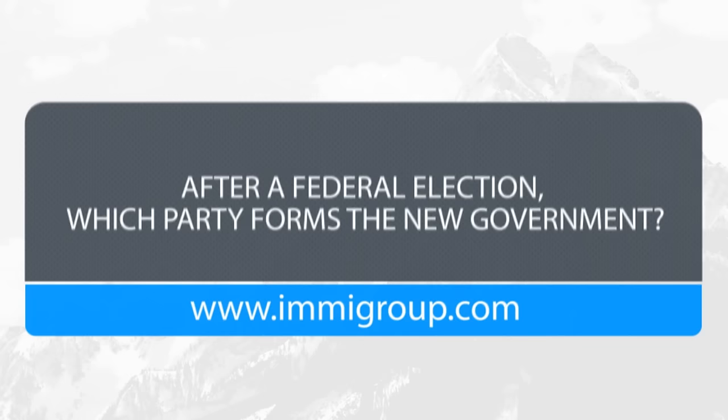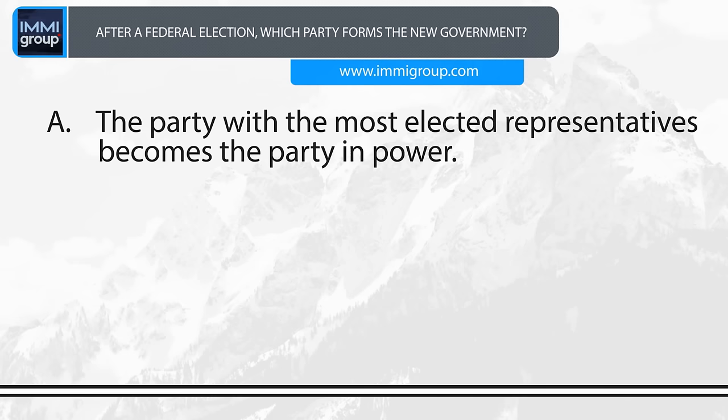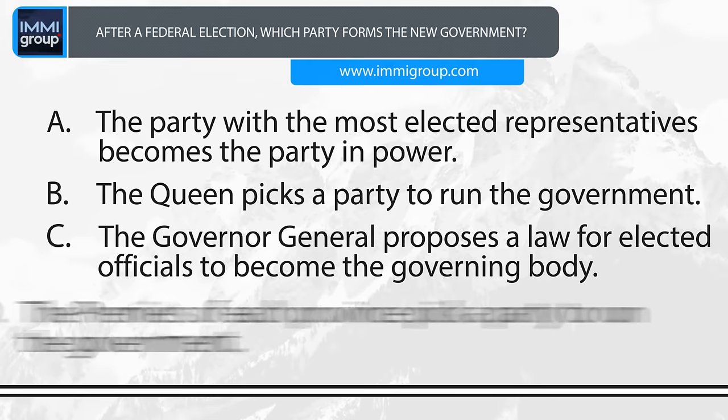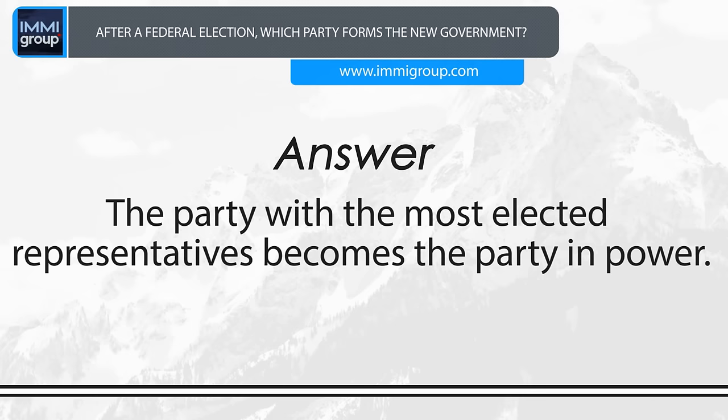After a federal election, which party forms the new government? A. The party with the most elected representatives becomes the party in power. B. The Queen picks a party to run the government. C. The Governor General proposes a law for elected officials to become the governing body. D. The Premiers of each province pick a party to run the government. Answer: The party with the most elected representatives becomes the party in power.